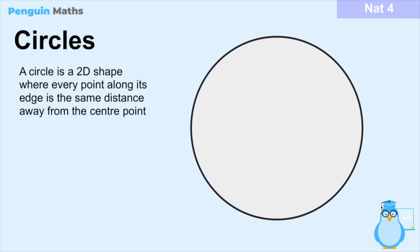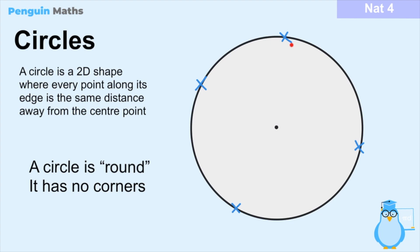I'm fairly confident that everyone knows what a circle looks like but it's important to define what the shape is so it can give us a better understanding further down the line. A circle is a 2D shape where every point along the edge is the same distance away from the centre point. Here are a few examples of several points along the edge of the circle, and each one of these points is the same distance away from the centre point — that is what defines a circle.